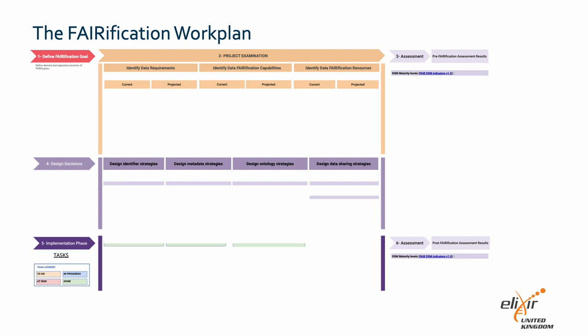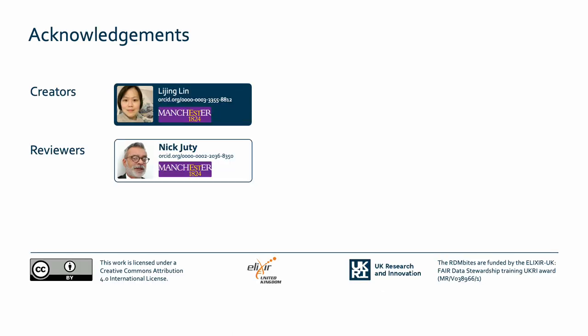Till now, we have gone through the three main components of the verification framework: the process, template, and work plan. The cycle phase of the verification process involves the majority of the work, and we have learned tools and template for this phase. In the next RDM Byte, I will demonstrate the verification process using an IMI project called CARE, and show you how the framework can be practically applied in a task. Thanks for watching. Please see links used as well as links to additional resources alongside this video.